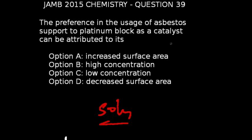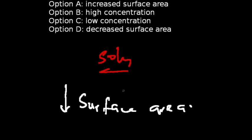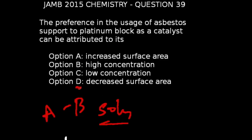JAM 2015 chemistry question number 39: The preference in the usage of asbestos support over platinum block as a catalyst can be attributed to — in chemistry we may prefer one catalyst to another for specific reasons. Asbestos is preferred to platinum blocks as catalysts because of their decreased surface area. The correct answer is option D, which is decreased surface area.